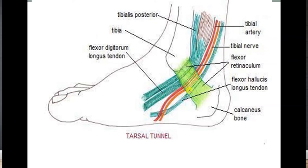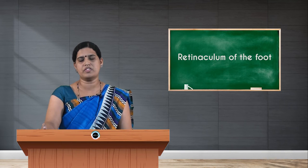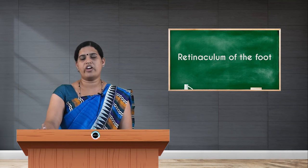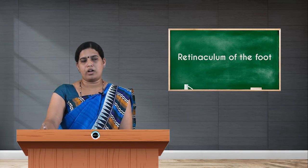In the hand, the equivalent structure is called the carpal tunnel, where compression of the median nerve leads to carpal tunnel syndrome. Similarly, here in the tarsal tunnel, it is the compression of the tibial nerve. After passing beneath the flexor retinaculum, the tibial nerve gives medial and lateral plantar nerves to the sole. Compression causes numbness in the sole of the foot — this is tarsal tunnel syndrome.